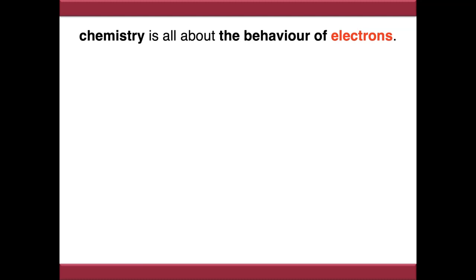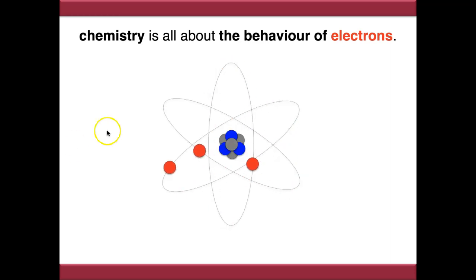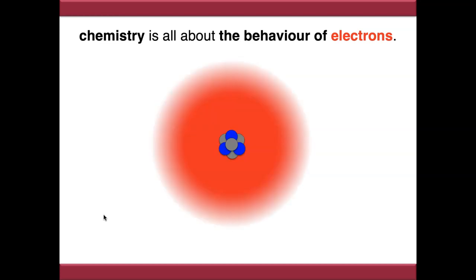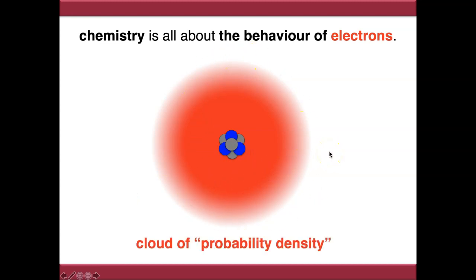Fundamentally, chemistry is all about the behaviour of electrons, and orbitals are where we store electrons. We have this classical image of a nucleus with electrons whizzing around it, but this is not exactly accurate. Because of wave-particle duality, electrons can behave as both a particle and a wave, so a more accurate representation is as a cloud of probability density.